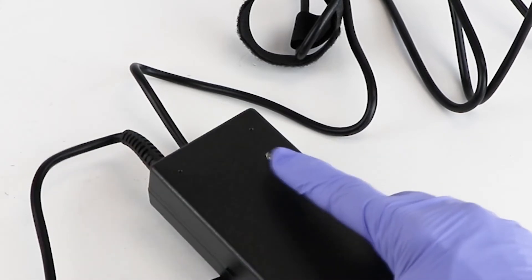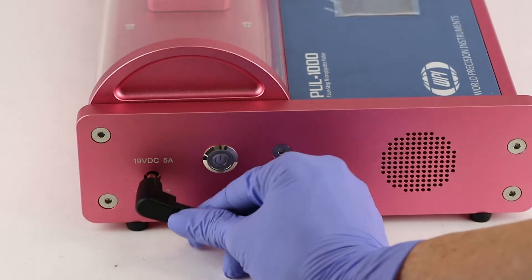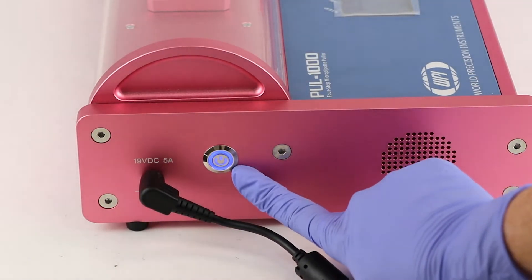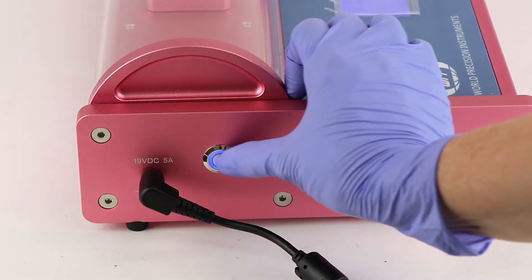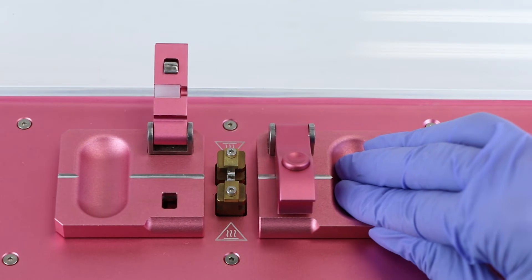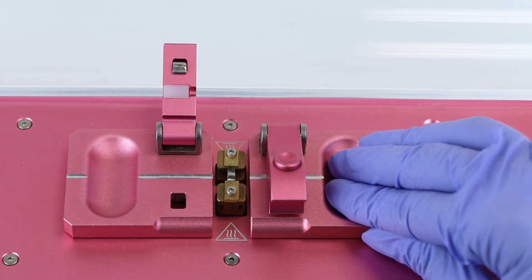Now plug the power cord into the POOL 1000. The switch illuminates. Press the power button on the rear panel to turn on the display. Push the carriages together toward the center to open the clamps.